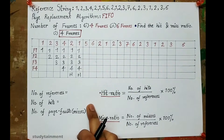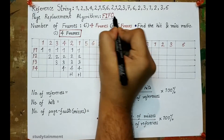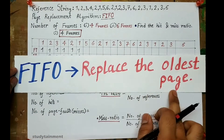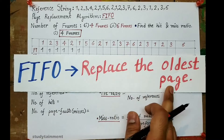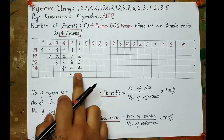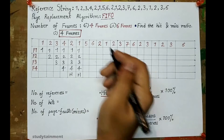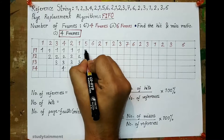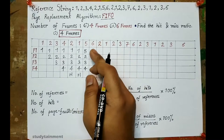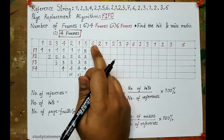Now 5 comes — among 1, 2, 3, 4, page 5 is not present, so we have to replace a page. While replacing we use the FIFO algorithm. FIFO tells us to replace the oldest or the earliest page. Among the frames, 1 is the earliest one because it came first, so 1 will be replaced with 5.